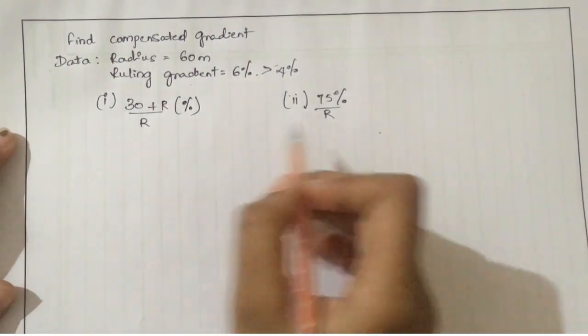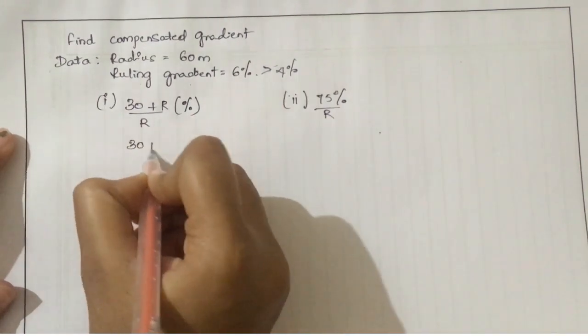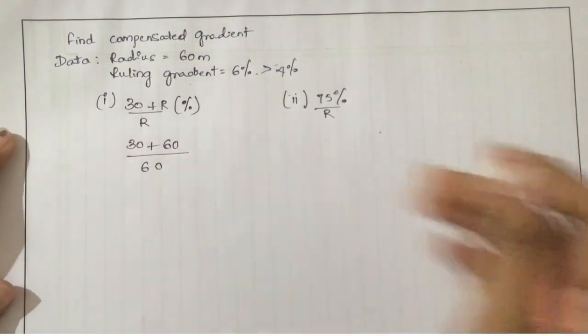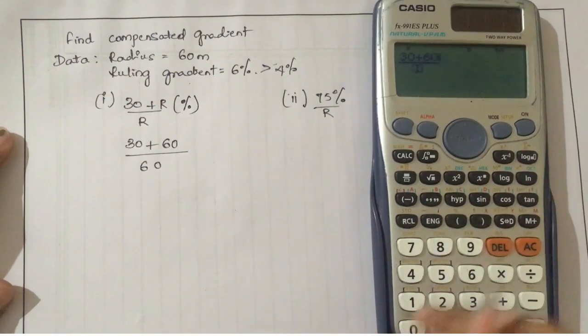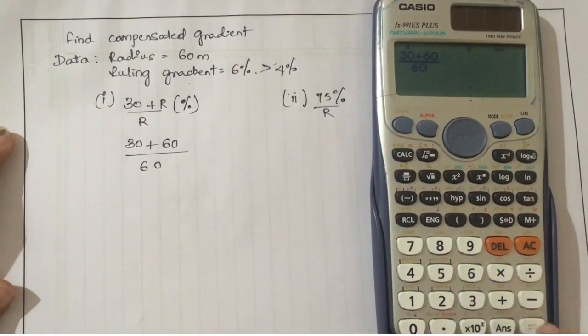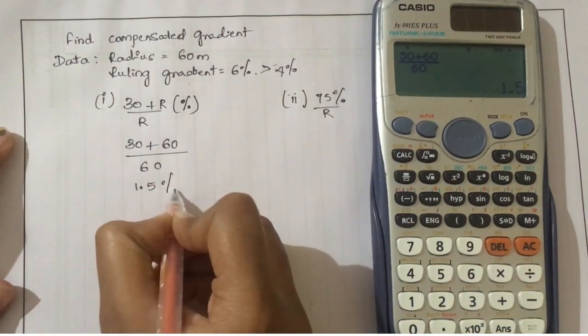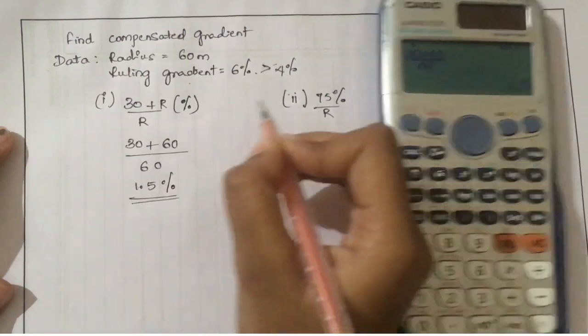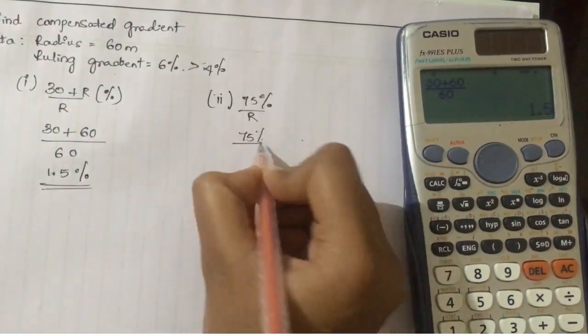Solving from the first equation: 30 plus the radius 60 divided by 60, this is providing the compensation of 1.5 percent. With the second formula, that is 75 percent by R as 60, we are getting 1.25 percent.